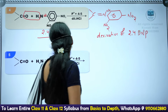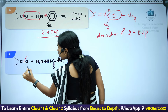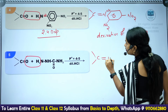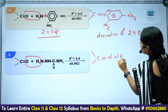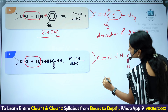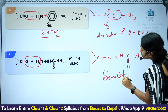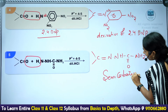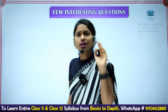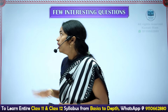For semicarbazide: remove one oxygen and two hydrogens from the terminal NH2 side, giving C=N-NH-C(=O)-NH2. This product is called a semicarbazone. Summary: you are always removing one C=O oxygen and two hydrogens - that's it.